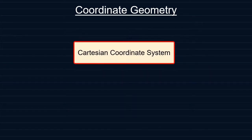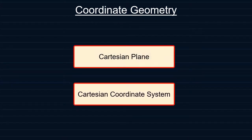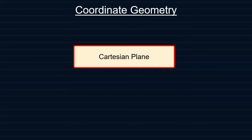Coordinate geometry is basically based on what we call the Cartesian coordinate system and the Cartesian plane. So what is the Cartesian plane?